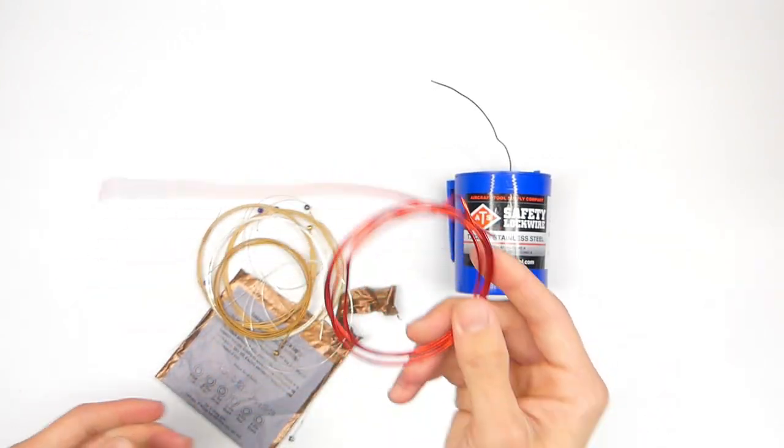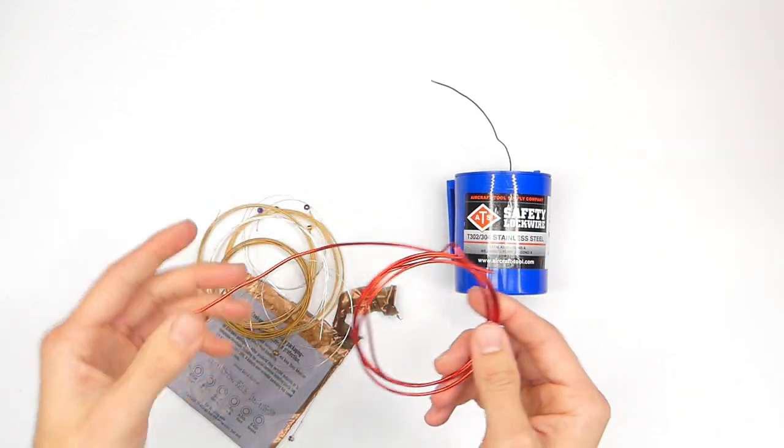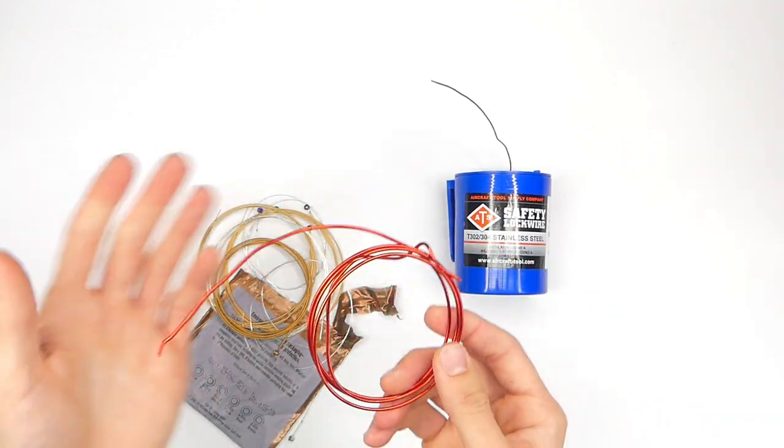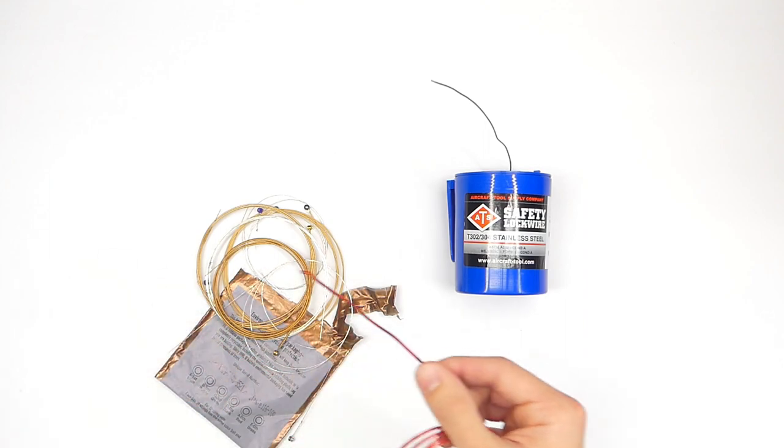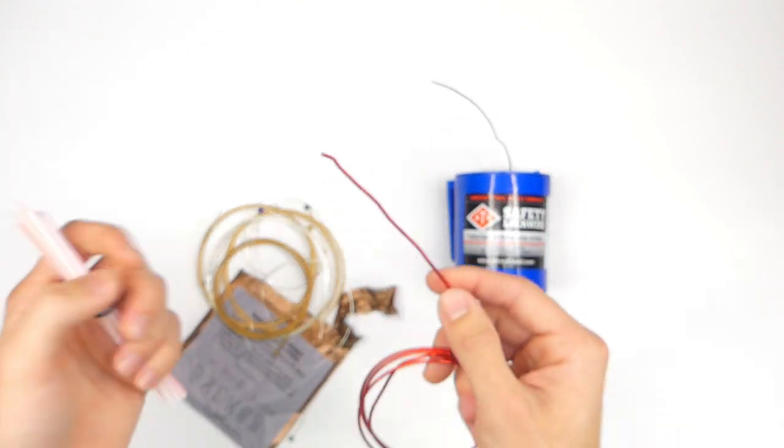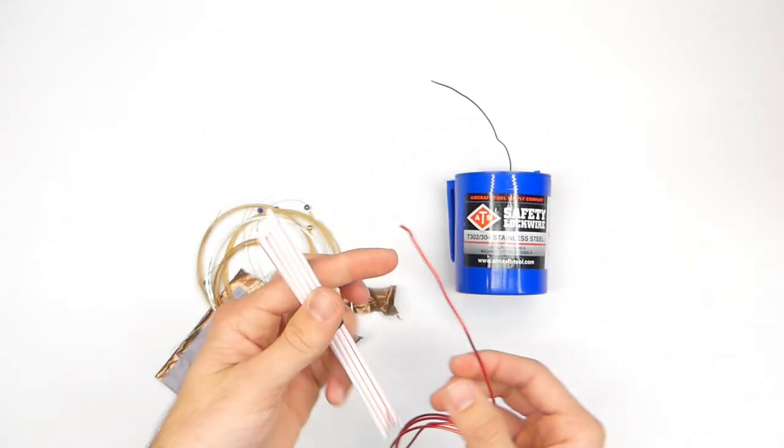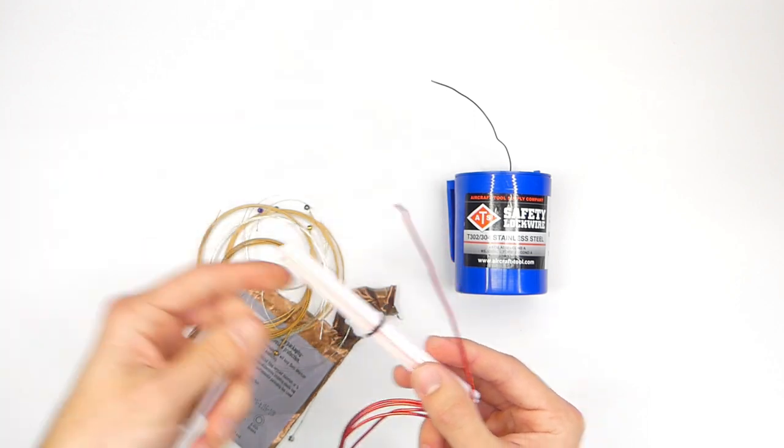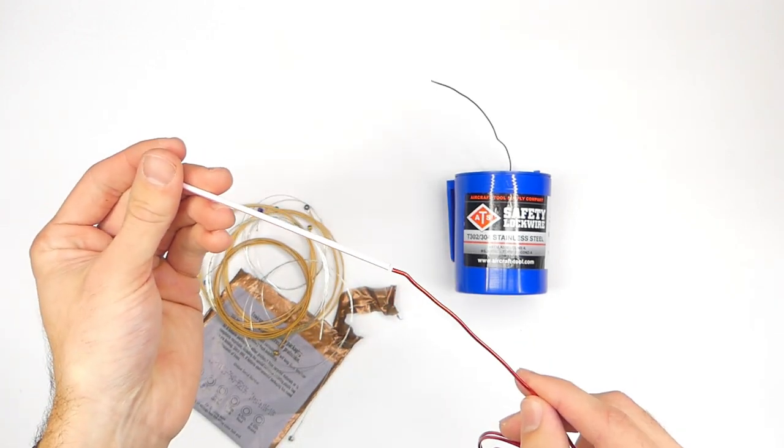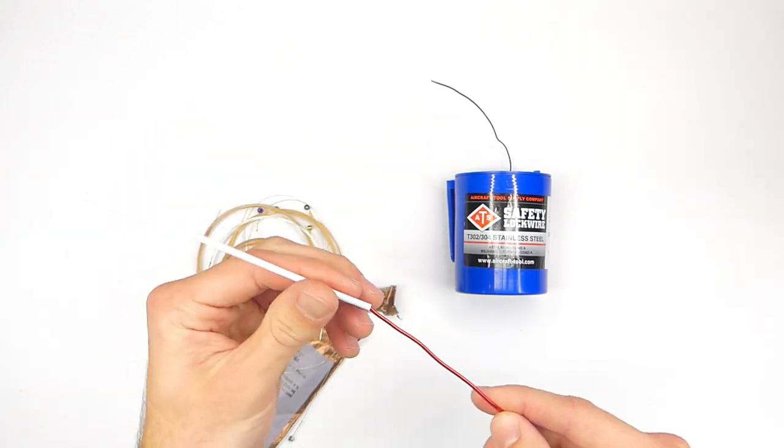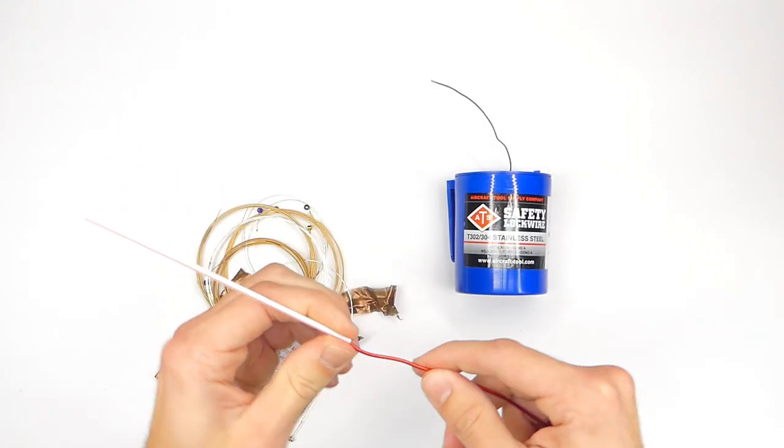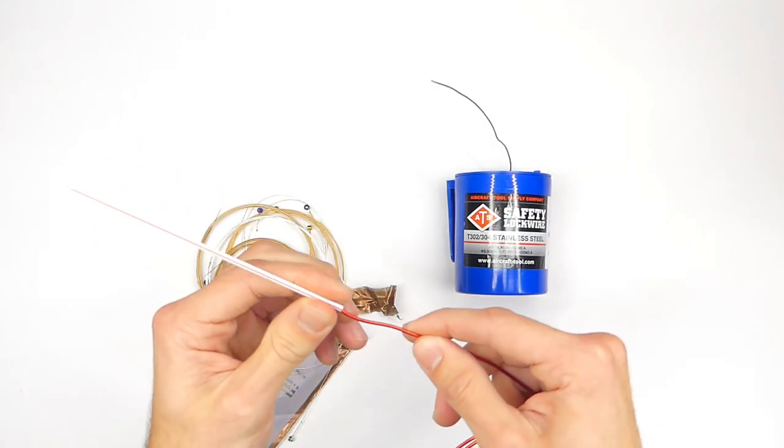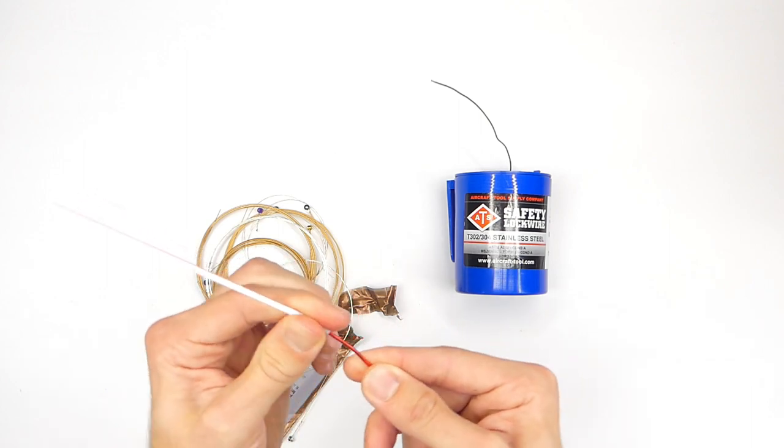Another key technique when it comes to using these types of materials for control rods is going to be supporting the control rod for longer runs. So maybe if it needs to run like the whole length of the aircraft, what you want to do is use like one of these coffee stirrers to actually slide the wire through. I kind of bent it, so it's a little hard to get in there, but you slide the wire through the coffee stirrer.